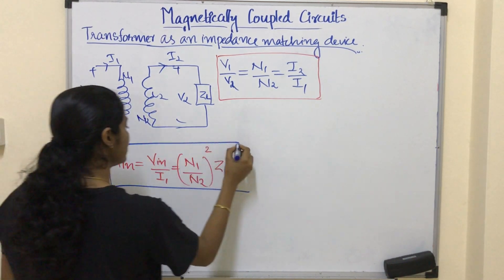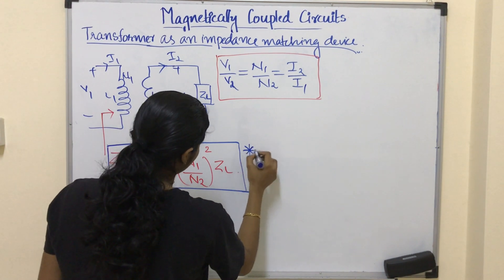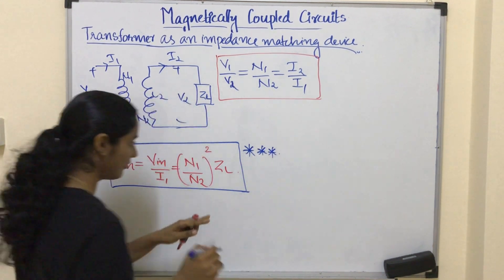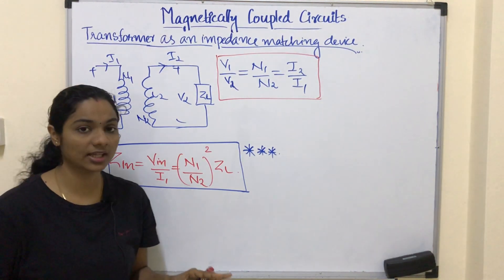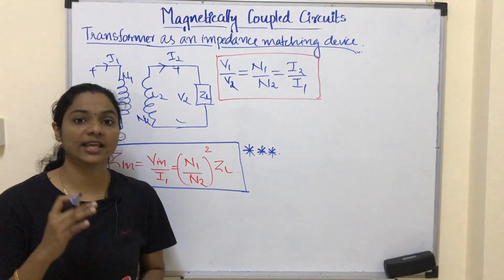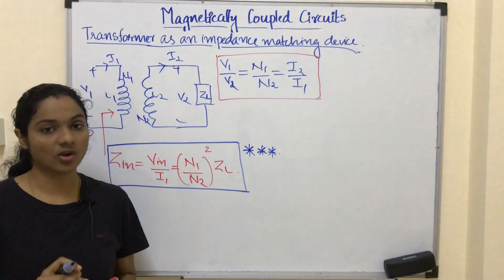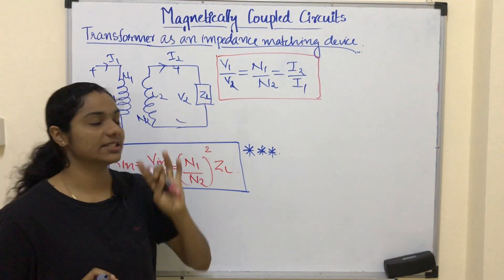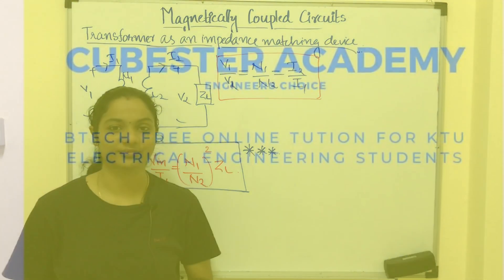Just remember this formula for solving problems. With this theory part I am concluding magnetically coupled circuits. In the next lecture we will solve some problems related to magnetically coupled circuits. Thank you.